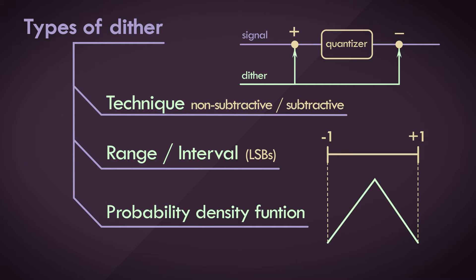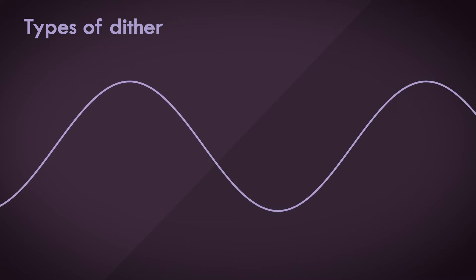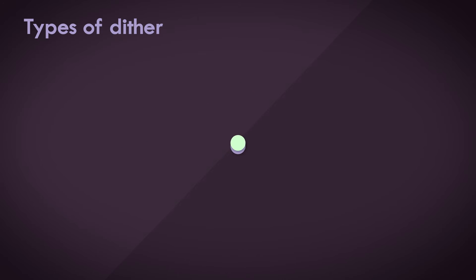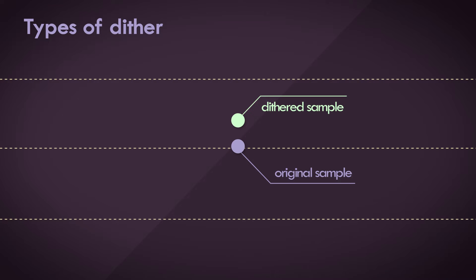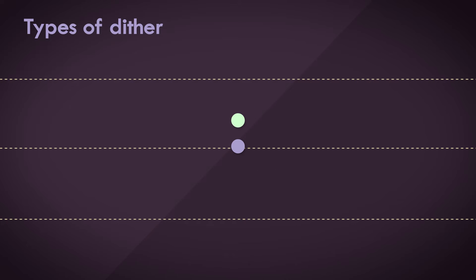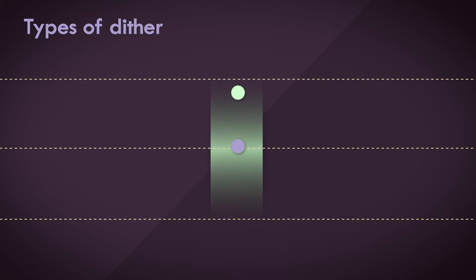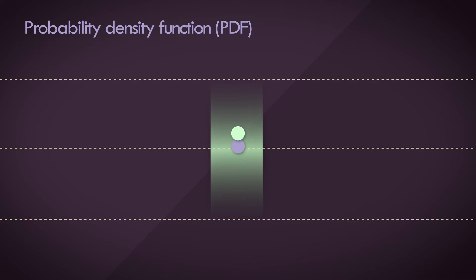All of this sounds complicated, but in fairness there's not much to it. Consider this input signal. If we apply a dither signal or noise to this input and zoom in to a single time instance — a thin slice — we can imagine a range of values added to or subtracted from that sample. There could be an equal probability that the noise falls anywhere within this range, or the probability could be skewed so the noise sample is more likely to fall in the middle of the interval, closer to the original sample. This expression of probability is called a probability density function, or PDF for short.